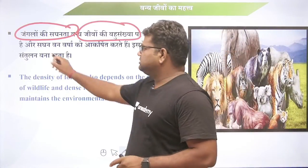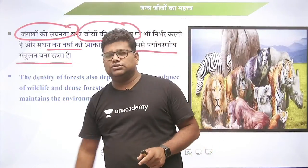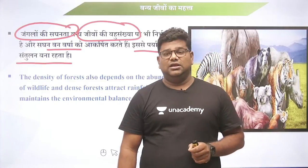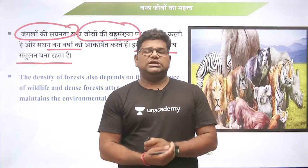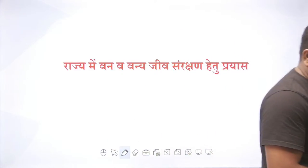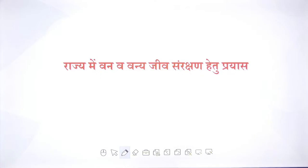अगर हम चाहते हैं कि पर्यावरणीय संतुलन बना रहे, जलवायु परिवर्तन न हो, तो उसके लिए जैव विविधता और वन्यजीवों के साथ-साथ पेड़-पौधों की भी रक्षा करनी पड़ेगी। राजस्थान सरकार द्वारा वन और वन्यजीव संरक्षण में किए गए कुछ महत्वपूर्ण कार्यों की बात करते हैं।